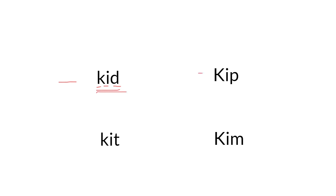K-I-P — Kip. I can tell Kip is a name because it starts with a capital K. K-I-T — kit. K-I-M — Kim. Kim is a name as well because it starts with a capital K. Did you see the K-K-K at the beginning of the words?